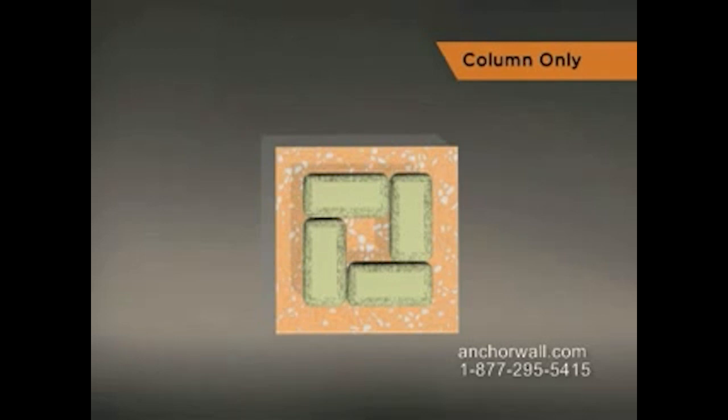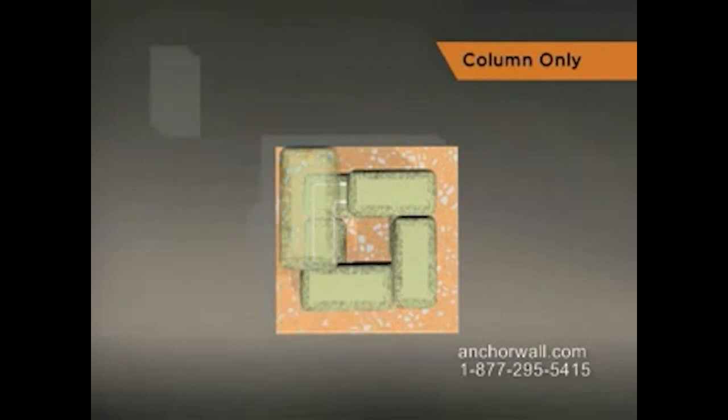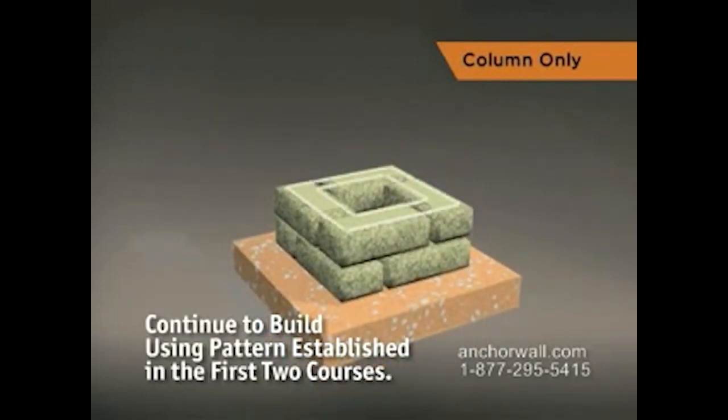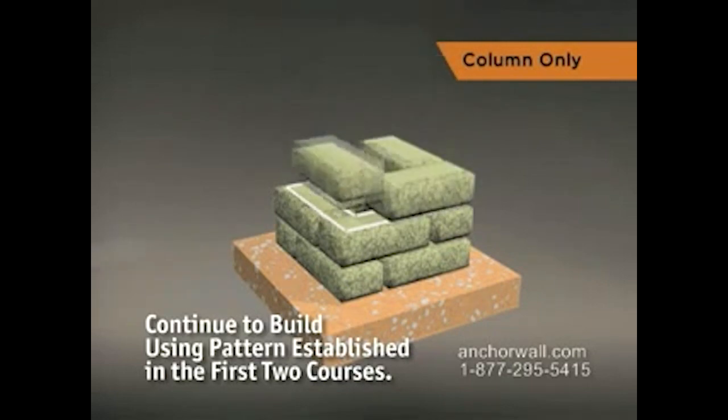Stack the next course so there's a staggered bond. Glue each unit in the column and follow the same procedures for each additional course. Finish this column by gluing the caps with concrete adhesive.